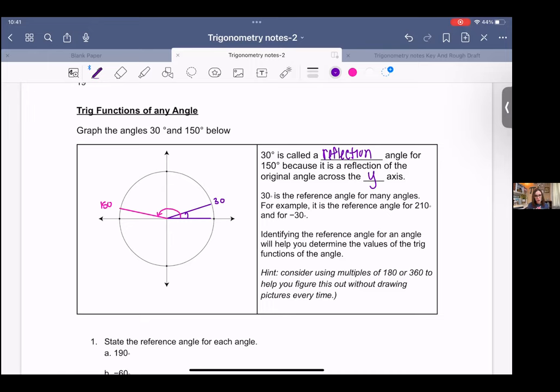To help you identify that, you can use multiples of 180 or 360. 360 would be a coterminal angle, which means they have the same terminal side. And then multiples of 180 would be that reflection.